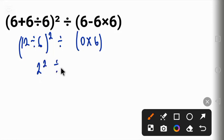Raised to power 2, divide by 6. 0 times 6 will give us 0. 2 raised to power 2 means 2 times 2 and that will give us 4. So we have 4 divided by 0 and 4 divided by 0 is 0.